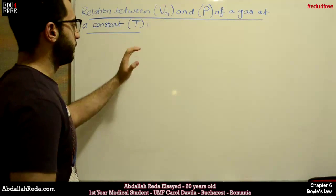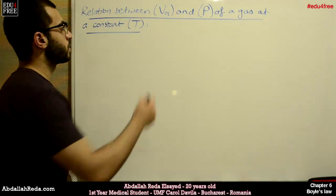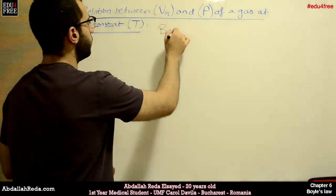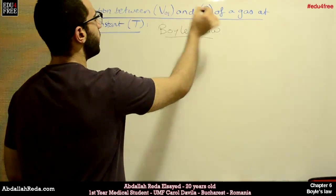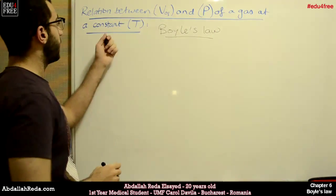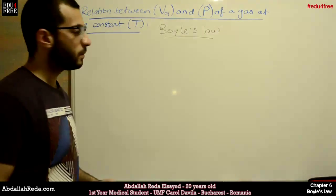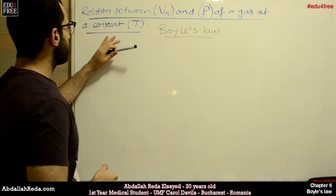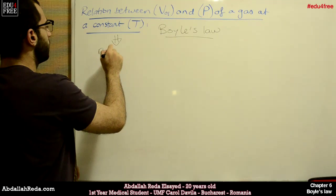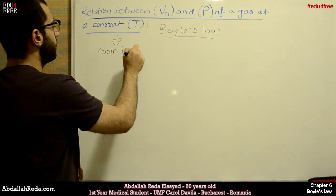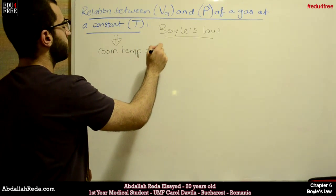For example, for today we have a law which is called Boyle's law, and this law deals with the volume and the pressure of a gas at a constant temperature. So the constant temperature here equals room temperature, which is around 25 degrees Celsius.